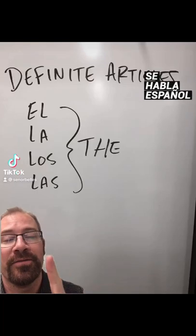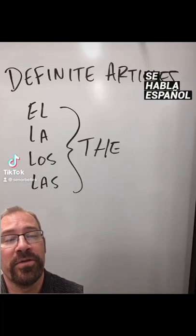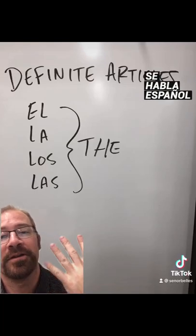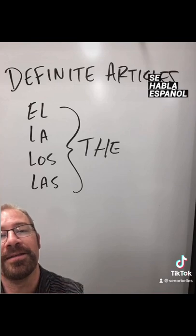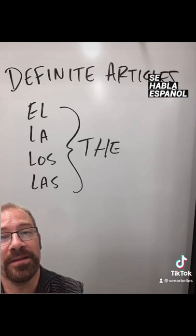In English, there's just one definite article — it's the word "the". In Spanish, there are four different ways to say "the", and they are el, la, los, and las.